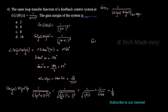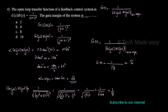For the gain margin: GM = 1 / |G(jω)H(jω)| at ω = ωpc = 1 / (1/8) = 8. So the gain margin is 8, which is the correct answer.